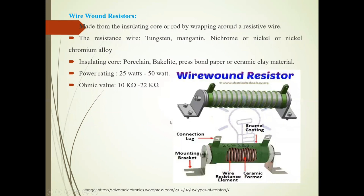The second type is wire wound resistors. These resistors are made from an insulating core or rod by wrapping resistive wire around it. The resistive wire is made of tungsten, manganin, nichrome, nickel, or nickel-chromium alloy. The insulating core is made of porcelain, bakelite, press bond paper, or ceramic clay material.